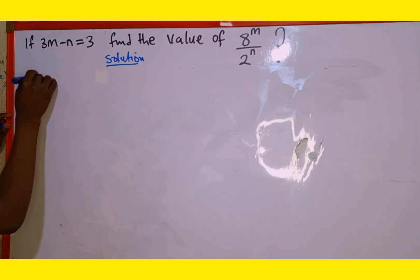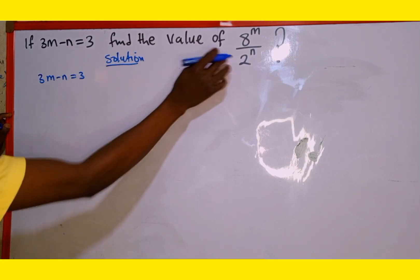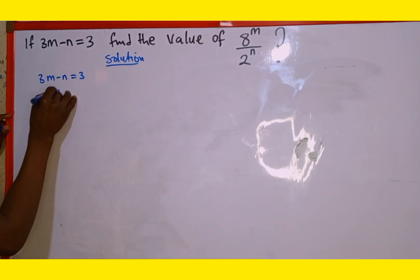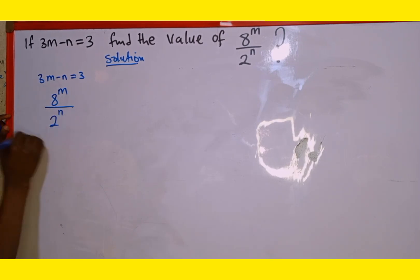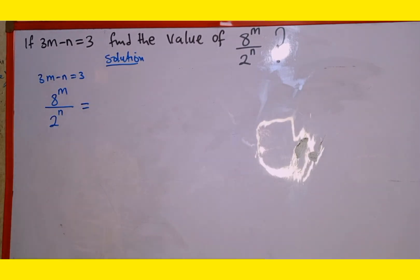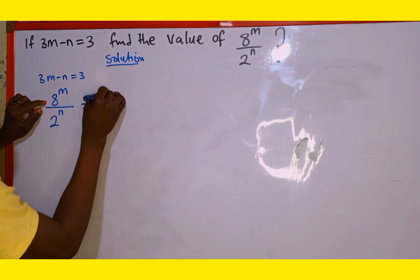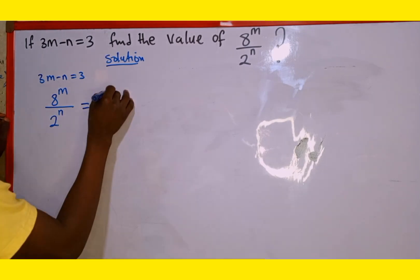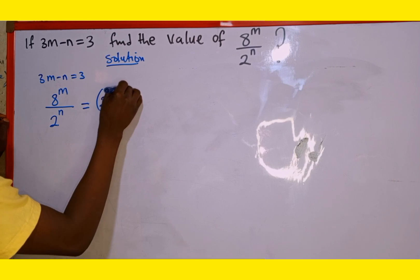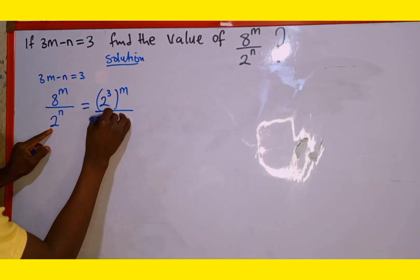So the question is: if 3m minus n is equal to 3, then we are looking for the value of 8 to the power of m divided by 2 to the power of n. Now, 8 to the power of m divided by 2 to the power of n can also be written as 2 to the power of 3 — because 2 multiplied in 3 places gives us 8 — all to the power of m, then divided by 2 to the power of n.